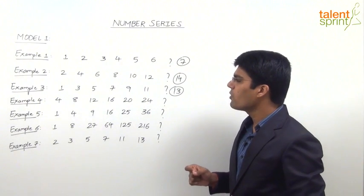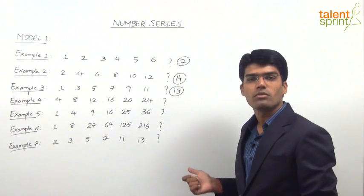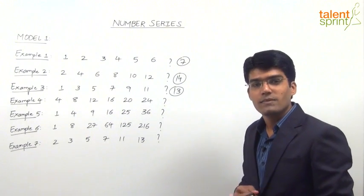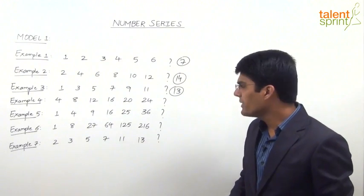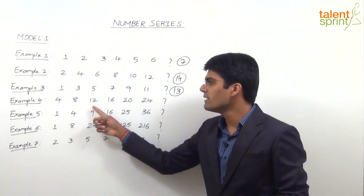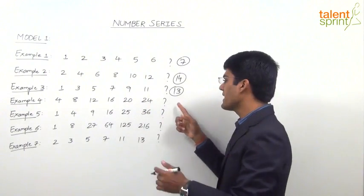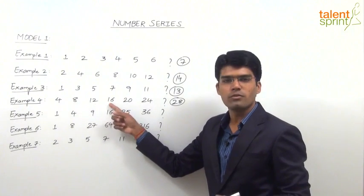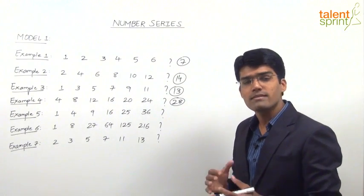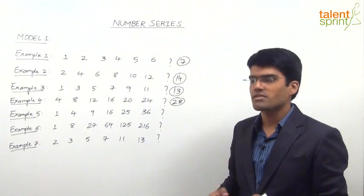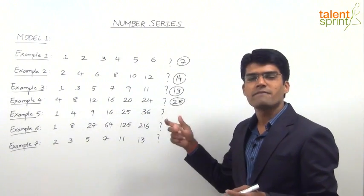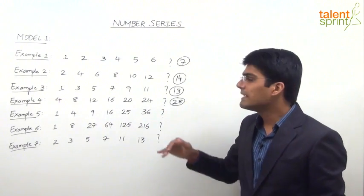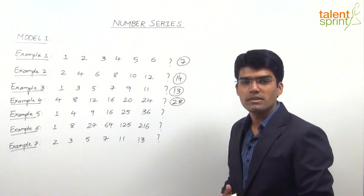Moving on to the next one: 4, 8, 12, 16, 20, 24 — what comes after 24? The answer is 28, because these are all multiples of 4: 4×1, 4×2, 4×3, 4×4, and so on up to 4×7, making the next term 4×8 = 28. Likewise, the series may be multiples of any integer — for example, 6, 12, 18, 24. We just need to identify that pattern and find the missing term.